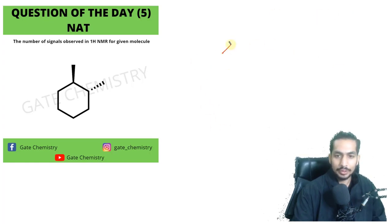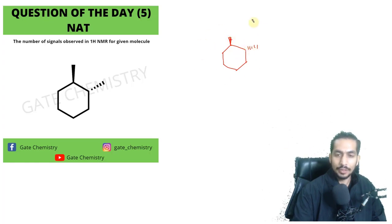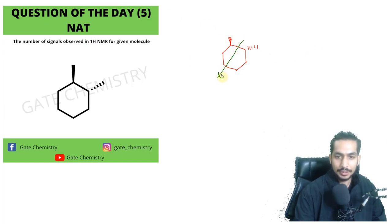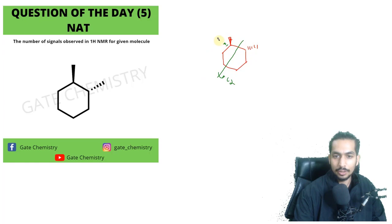So what we need to do is consider the planar structure, where we have one methyl above the plane and one methyl below the plane. If you consider the planar structure, this molecule will have a C2 symmetry axis passing through it. With a C2 symmetry, we have a hydrogen below the plane on one carbon and a hydrogen above the plane on the other carbon.